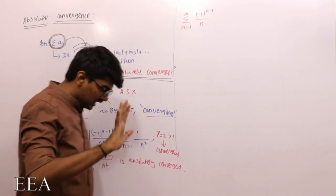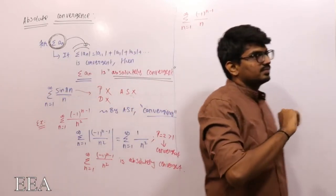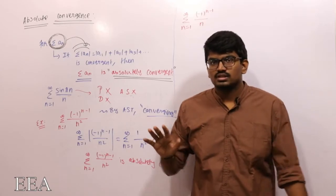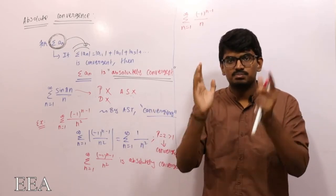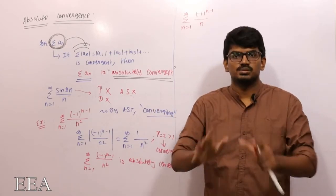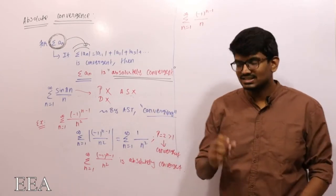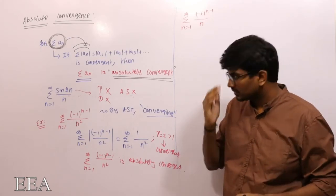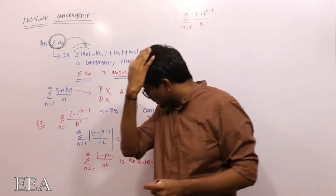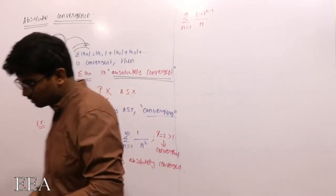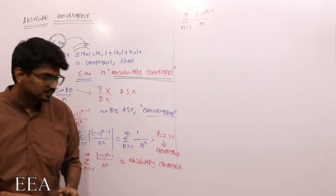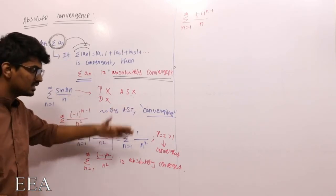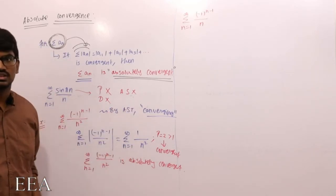I hope there is no doubt until now. Just be patient because there are some important conclusions coming up. For this first series, there are no issues — it is convergent and it is also absolutely convergent. Now consider the series summation of (-1)^(n-1) / n.